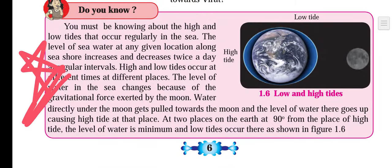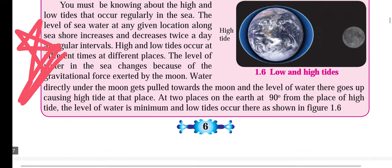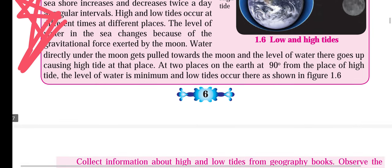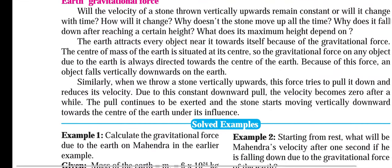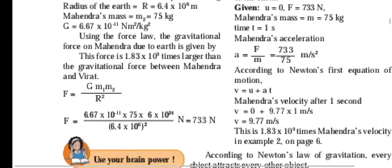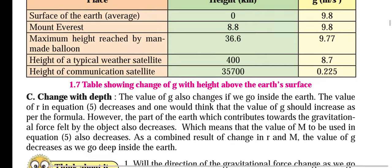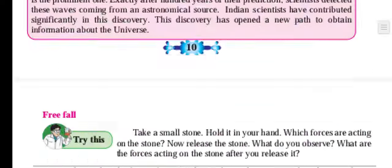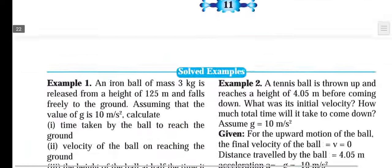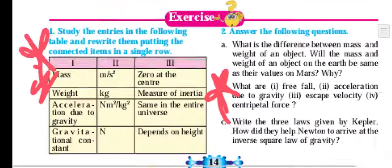On page number 6 you will get a pink color box on low tides and high tides — how they are produced. All these questions you will get from the pink box. Alright, move on to the next page. We will directly come to the question part; you need to revise the question part.